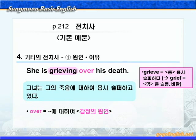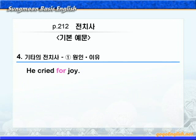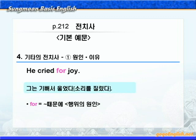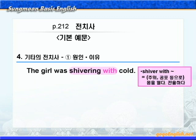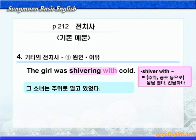다음으로 전치사 for를 보겠습니다. 여기 for는 '뭐뭐 때문에'라는 뜻으로 행동의 원인을 나타내니까, '그는 기뻐서 울었다' 혹은 '기뻐서 소리를 질렀다'가 됩니다. 다음으로 with가 나옵니다. 'The girl was shivering with cold.' shiver with는 '추위나 공포 등의 이유로 몸을 떨다' 혹은 '전율하다'라는 뜻이니까, '그 소녀는 추위로 떨고 있었다'가 됩니다. 여기 전치사 with는 '뭐뭐 때문에'라는 뜻으로 행동의 원인을 나타내고 있습니다.